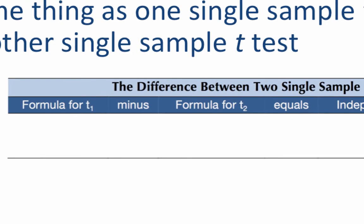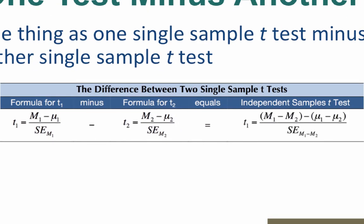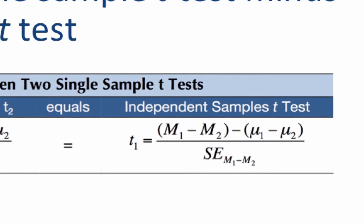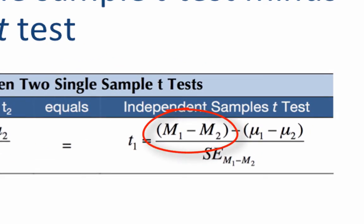First we need a single sample t-test. That is our starting point. Good. Now we need a second single sample t-test. Same as the first. So let's subtract the second single sample t-test from the first. And notice what we have done here. To subtract the two tests, we just did some algebra. We combined the two sample means to subtract them. We combined the two population means to subtract them. Then in the denominator, we pooled the two variance terms.